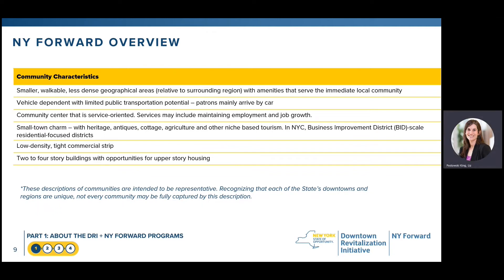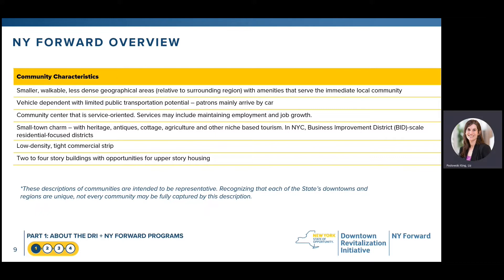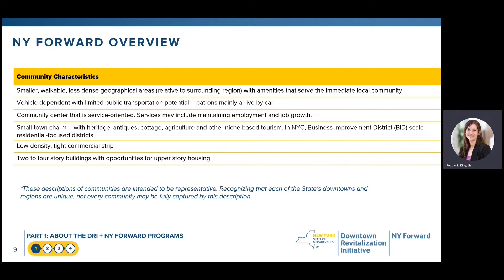New York Forward community characteristics are representative, and the state's downtowns and regions are unique, so not every community might fit perfectly within this description. In general, a boundary similar to the DRI should be defined for a New York Forward community that is tight and walkable. These areas may be less dense than DRI areas, and the focus may be more on serving the needs of the immediate local community as opposed to the needs of the larger regional community.